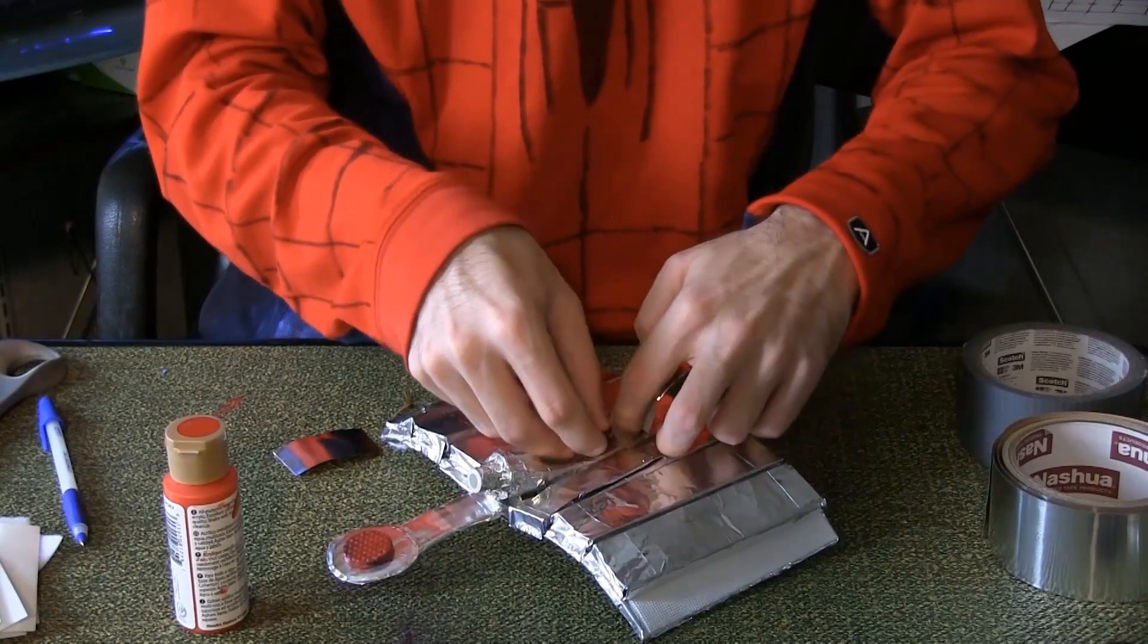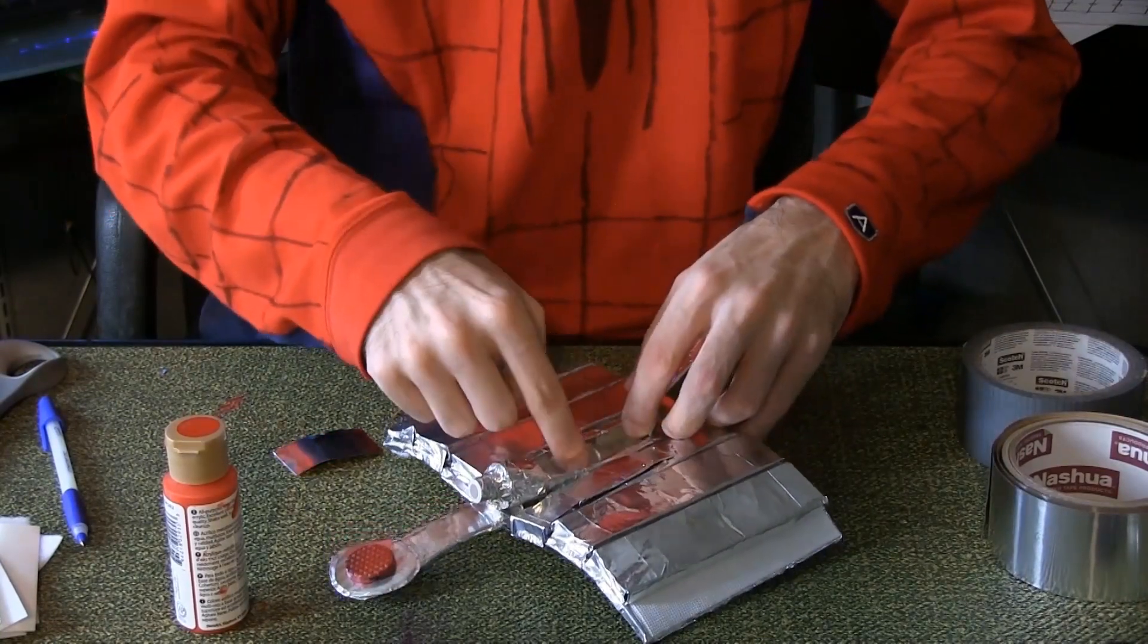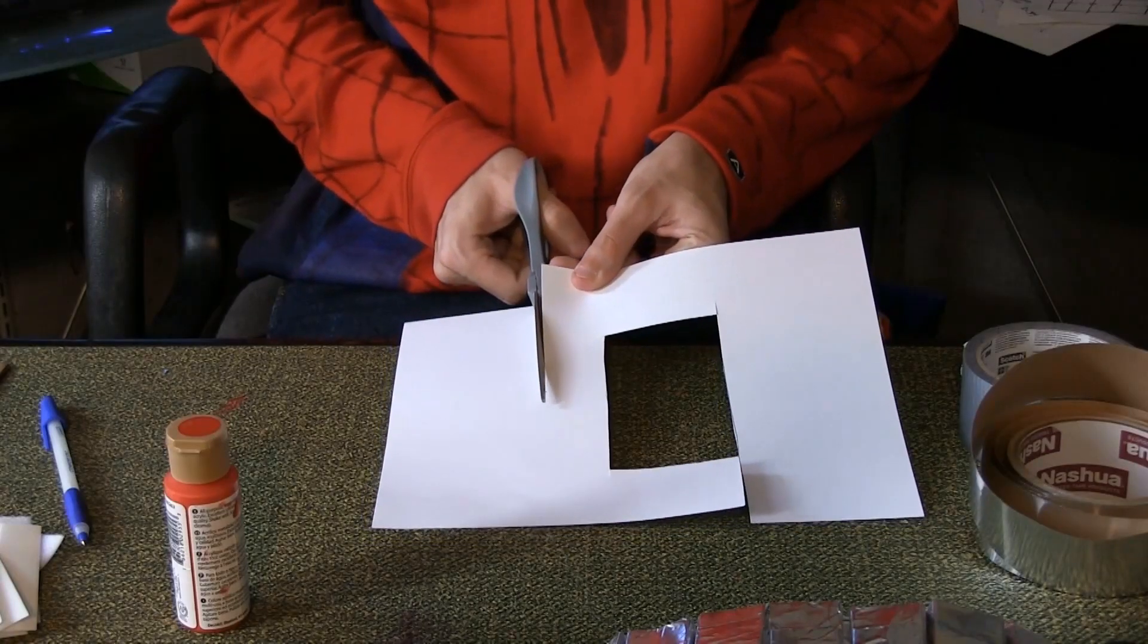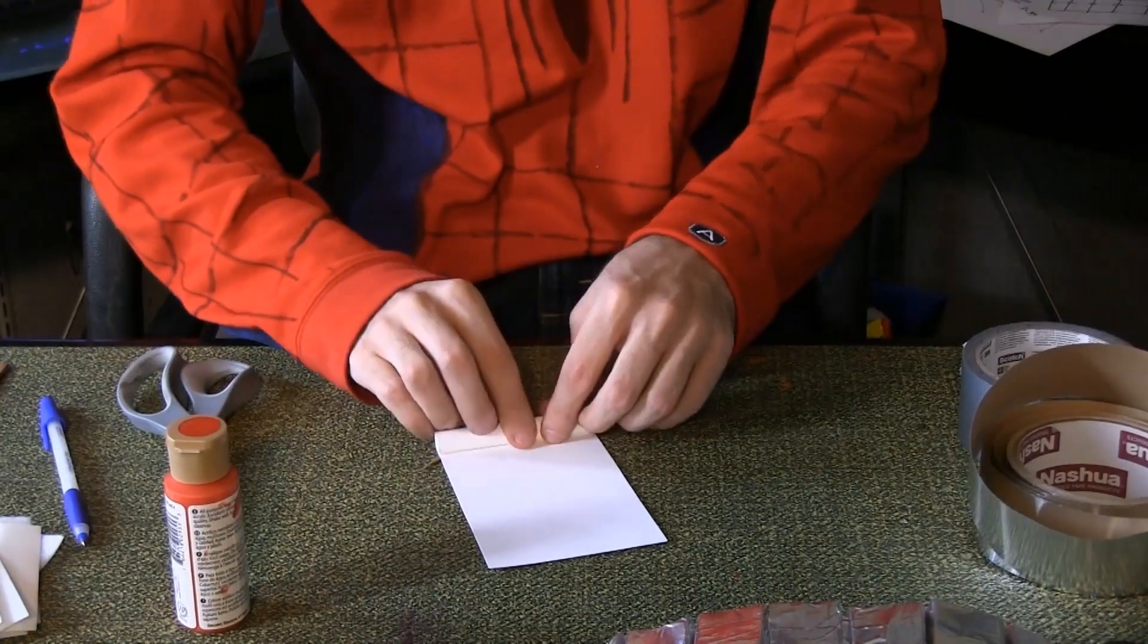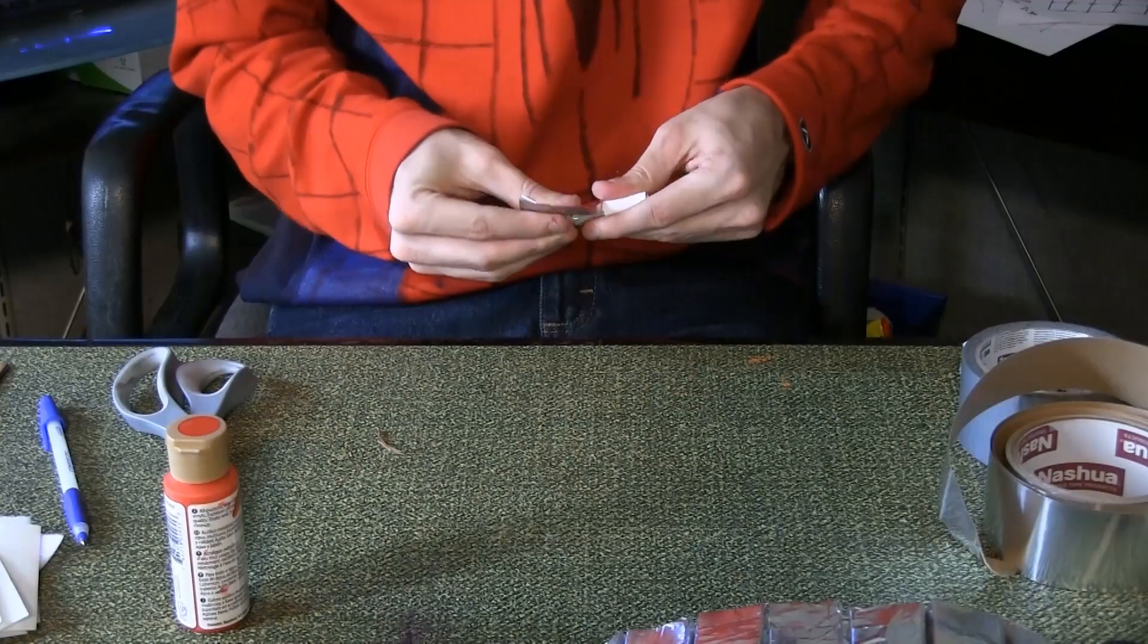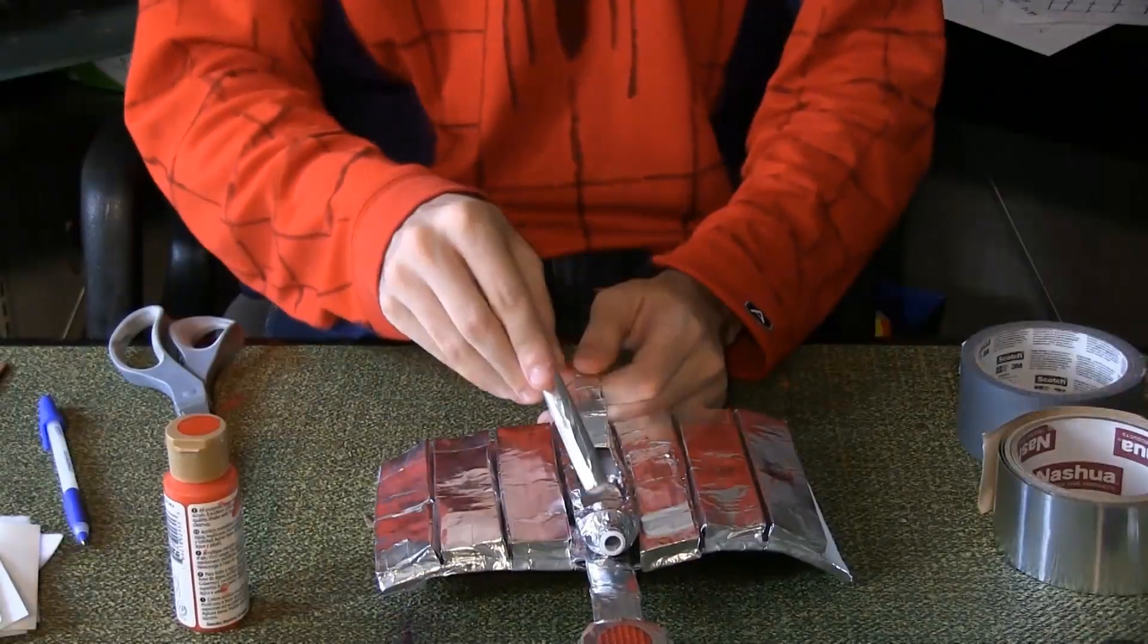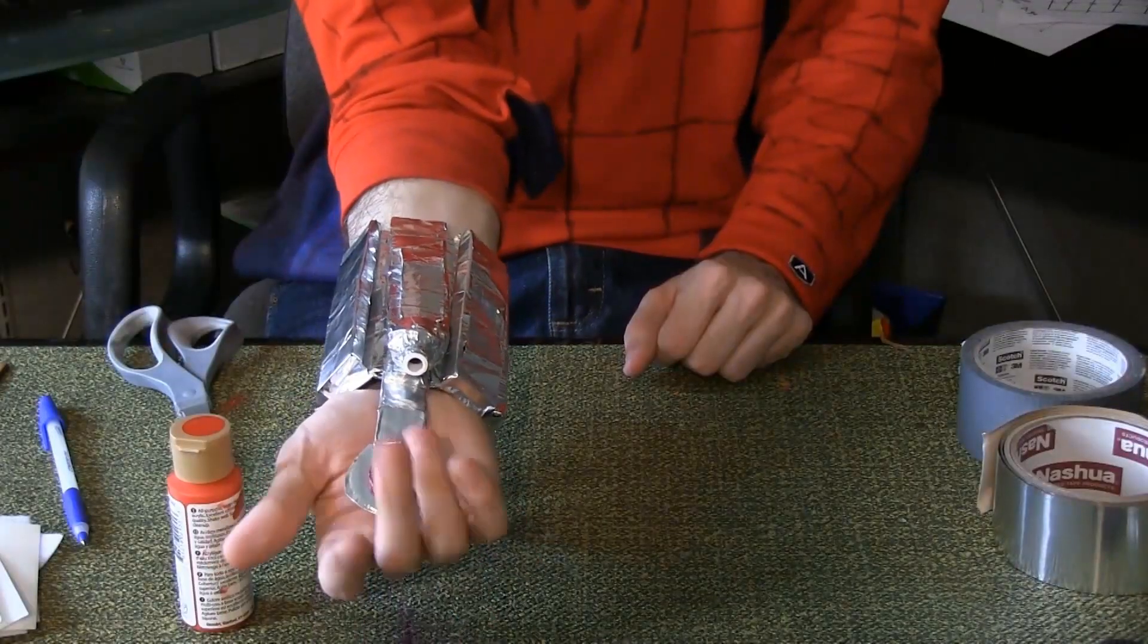Cover the interiors of as many of the boxes as you want with aluminum tape. Finally, cut out a 2-inch wide length of cardstock and roll it up. Wrap the piece in aluminum tape. This is your web filament cartridge. Load it into the central canister and there's your finished web shooter.